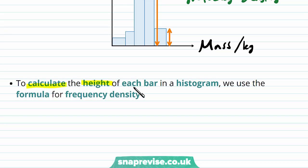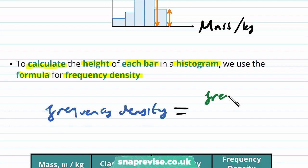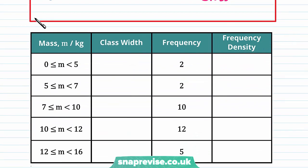To calculate the height of each bar in a histogram, we use the formula for frequency density: to find the frequency density, we take the frequency of a class and divide it by the class width. This ensures each bar is standardised. So we have our data for mass and frequency, and we can find the class width. We have 5 minus 0, which is 5 for our first class width. Then 7 minus 5, which is 2.